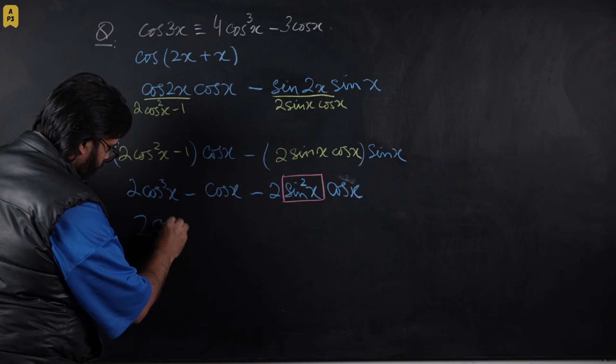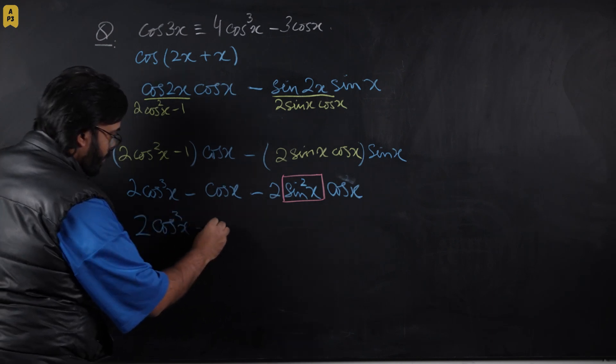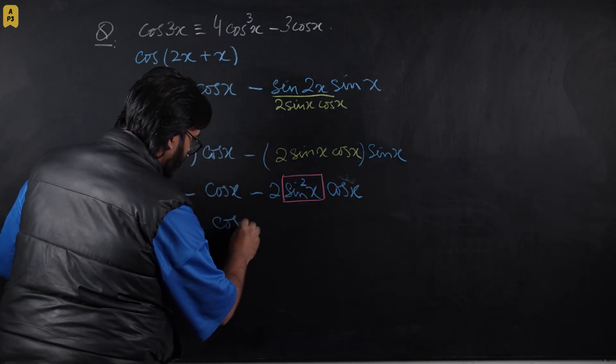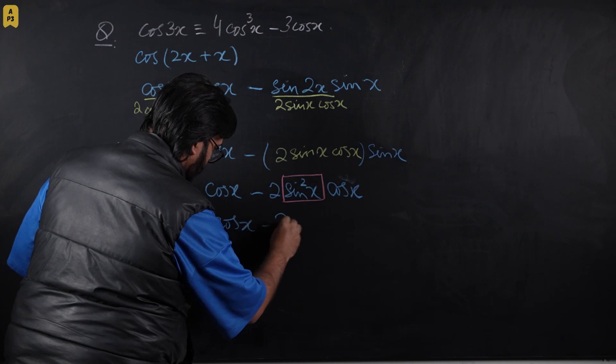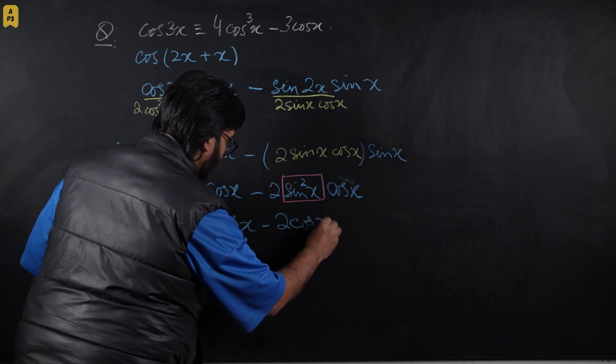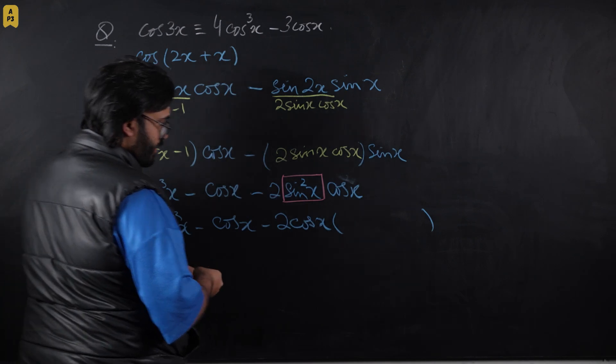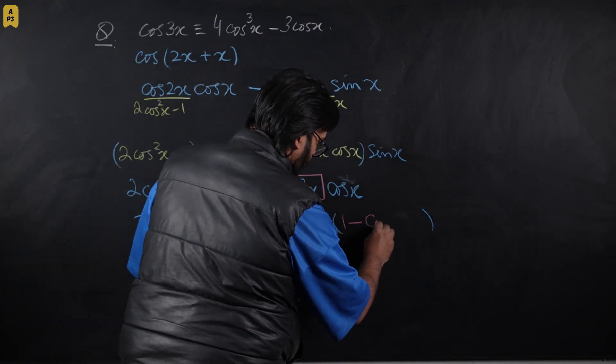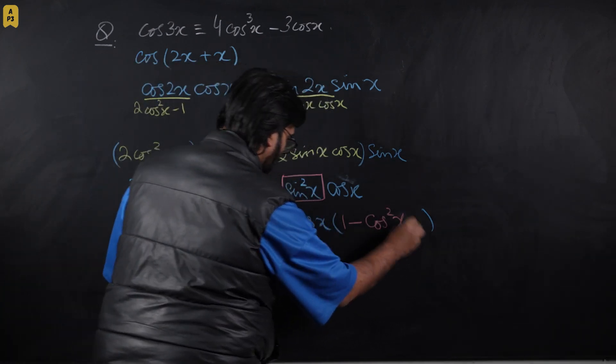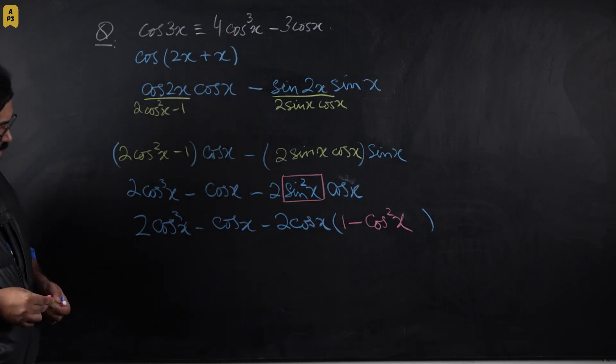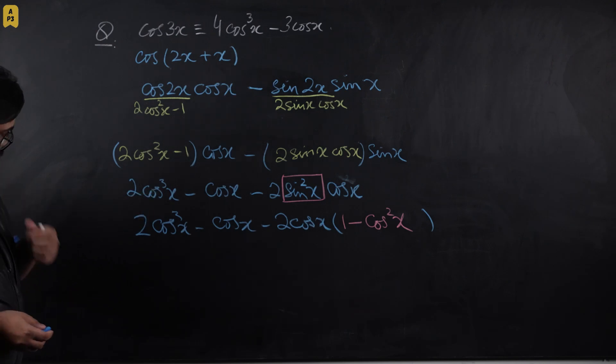So you have 2cos³x - cos x - 2cos x, and in place of sin²x I'm going to place 1 - cos²x. With this step, we've gotten rid of all the non-cos terms and fixed the angle.